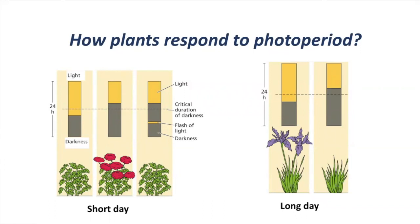How specifically does photoperiod affect flowering? Research has demonstrated that plants respond to the darkness period in each daily cycle, not light, but darkness. For example, short day plants will not flower under a short period of night. Of course, we sometimes are looking to induce flowering by doing treatments providing the right conditions to trigger this process.